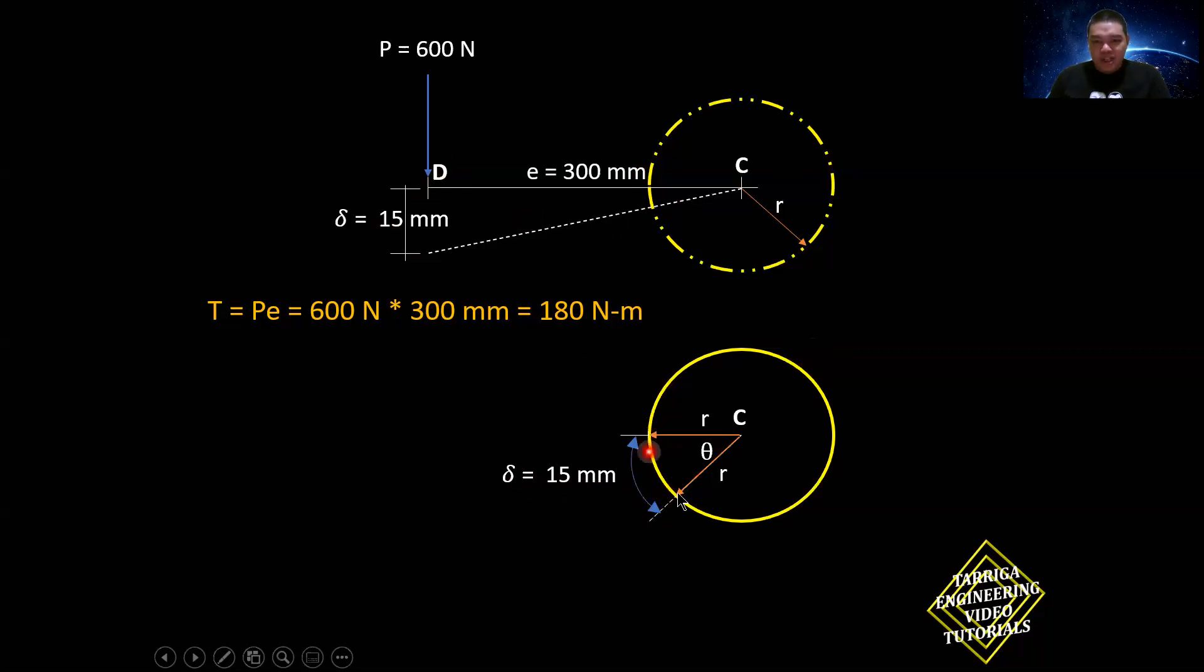Remember in geometry, this is an arc length with radius and theta. There's a relationship. The relationship is S equals R theta in radians. Arc length is equal to the radius of the circle times the angle, a subtended angle in radians.